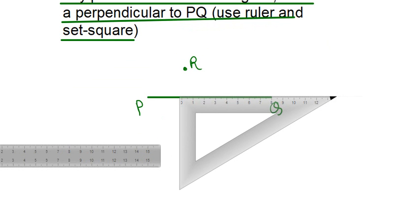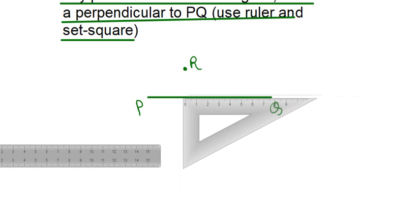Now, you keep it like this and keep it a little bit short. Suppose, this will be your set square. Now, you keep it, align it with point R, like this.